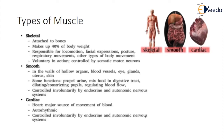Smooth muscle lines the inside of blood vessels and organs such as the stomach, and is also known as involuntary muscle. It is the weakest type of muscle but has an essential role in moving food along the digestive tract and maintaining blood circulation through blood vessels.